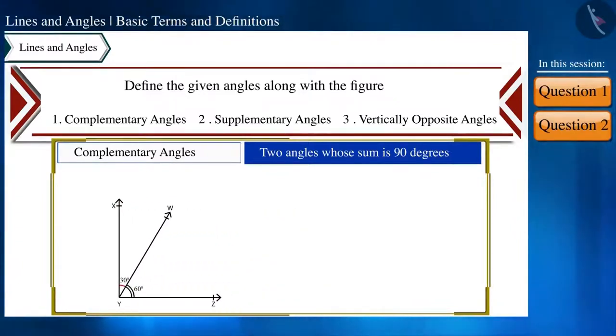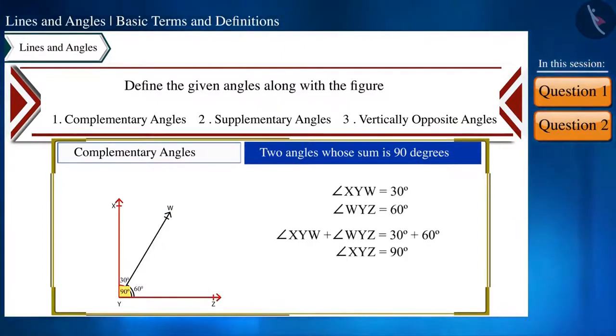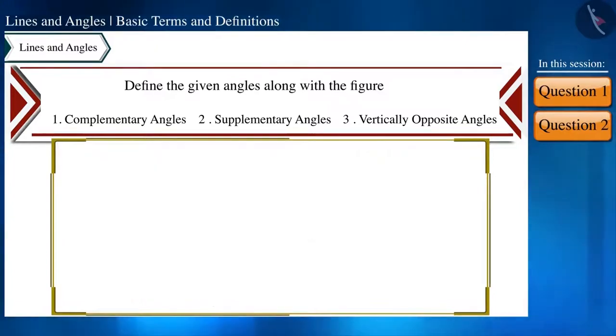For example, look at this figure. In angle XYZ, the measure of angle XYW is 30 degrees and the measure of angle WYZ is 60 degrees. On adding the two, we get 90 degrees. That is, these two angles are complementary angles.